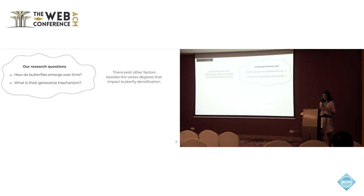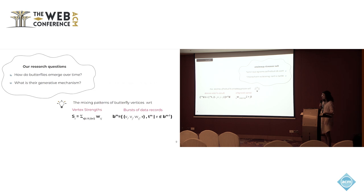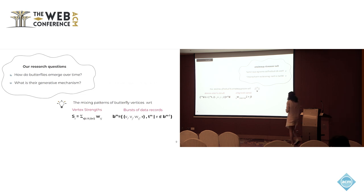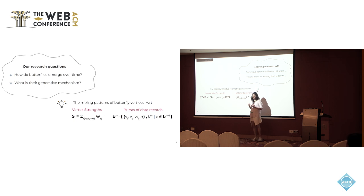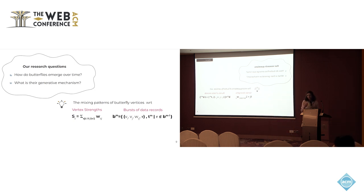That is why we ask: how do butterflies emerge over time, and what is their generative mechanism? Our main idea to answer this question is to study the mixing patterns of butterfly vertices with respect to the weighted degree — which we call the strength of the vertices or nodes — and the burst of data records, which are all of the edges that arrive at the same time point and have the same timestamp.